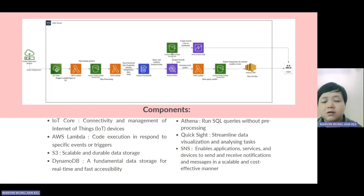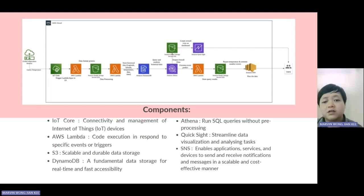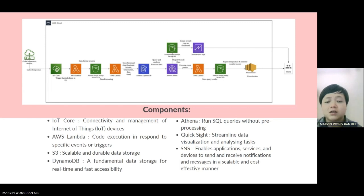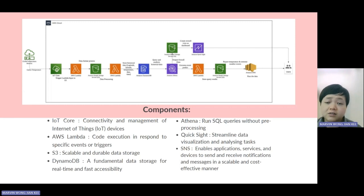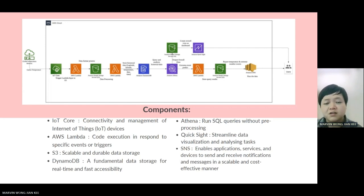The sixth component, QuickSight, allows data visualization — for example, tables, bar graphs, or pie charts — and the user can customize their data visualization. Finally, SNS enables applications, services, or devices to send and receive notifications and messages, so the user can receive notifications on important alerts.